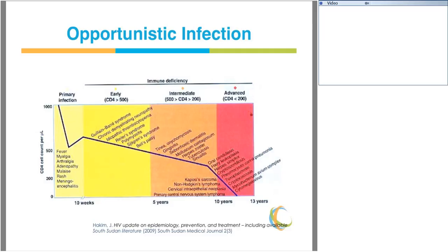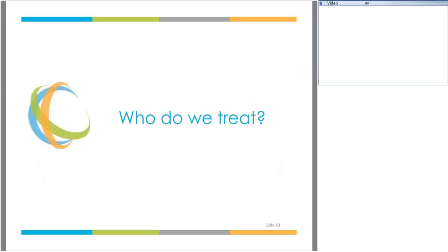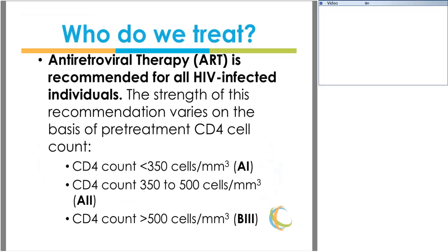Once the CD4 count falls below 200, more significant and life-threatening opportunistic infections can occur. Now regarding who we treat and when treatment is indicated: in March 2012, the DHHS guidelines changed and antiretroviral therapy is now recommended for all HIV-infected individuals. The strength of this recommendation varies based on pre-treatment CD4 cell count. For those with a CD4 count less than 350, treatment should always be started as soon as possible. Recent recommendations also suggest that all patients with HIV infection be offered antiretroviral therapy, regardless of CD4 count.